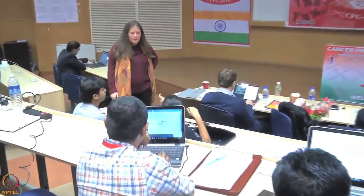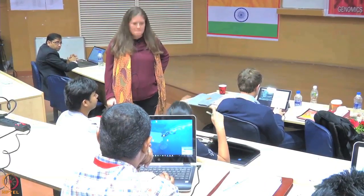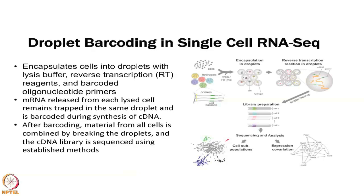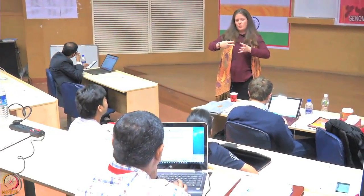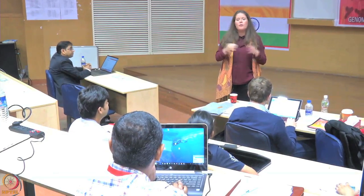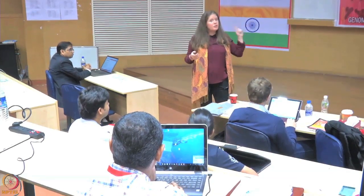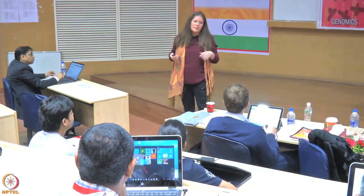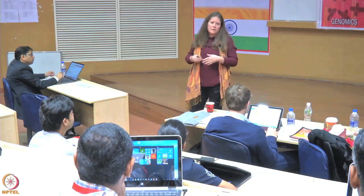With Illumina there is a size filter — you know your fragments are a certain size — and that is incorporated into the single-cell workflow. The sequencing process is very similar to bulk RNA-seq; it is just that there is less RNA, so coverage is lower. Coverage is much lower with single-cell RNA-seq than with bulk, so you only measure up to about a thousand genes versus 20,000 genes in bulk.